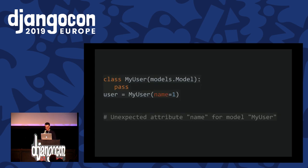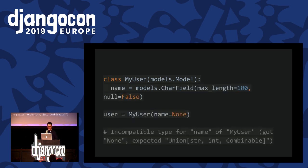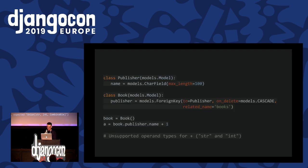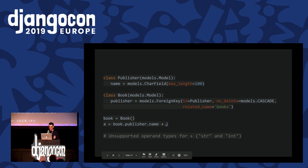If I add the plugin to the config — the plugin comes with the stubs — it will not complain. This plugin does some cool magic so that you can actually type check some of the cool Django features like the ORM. If you try to construct a model object and it doesn't have the attribute you're using, it will tell you about that.